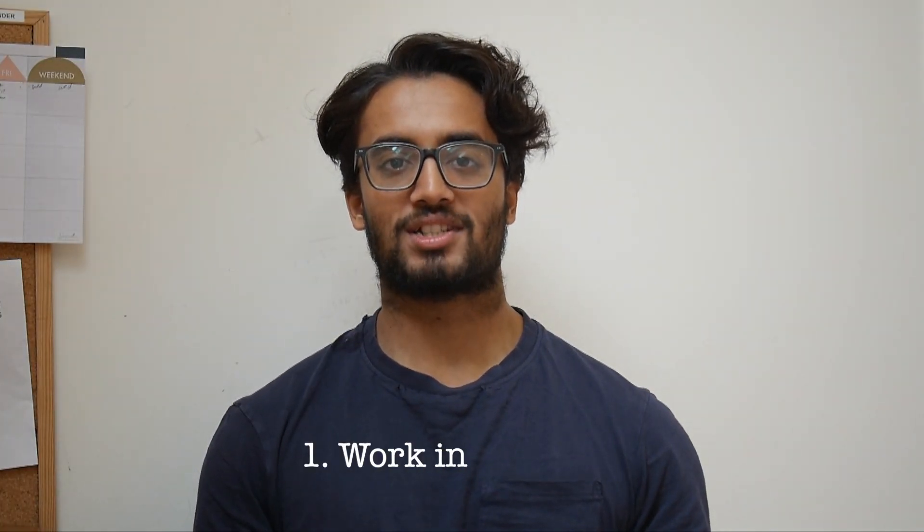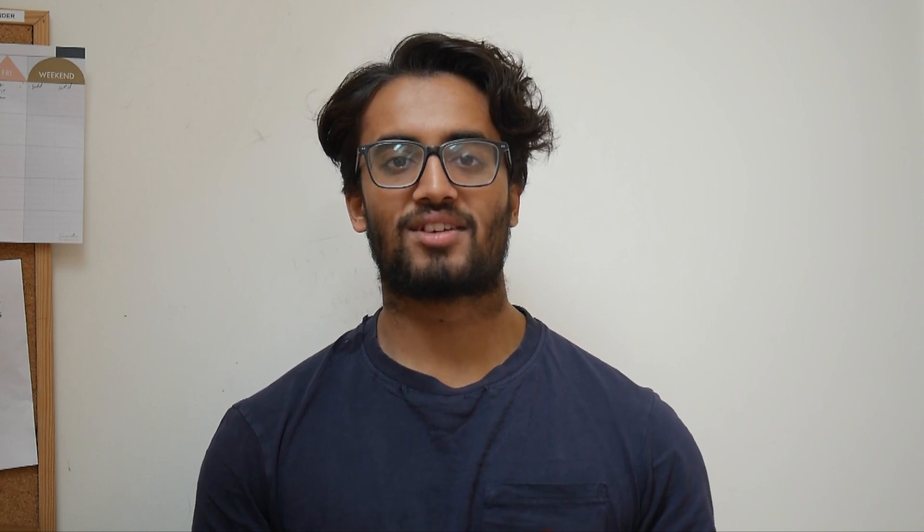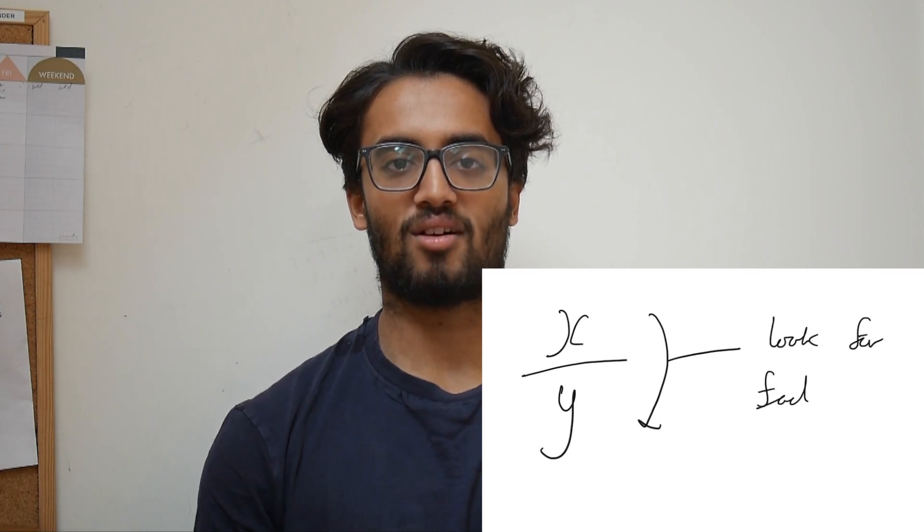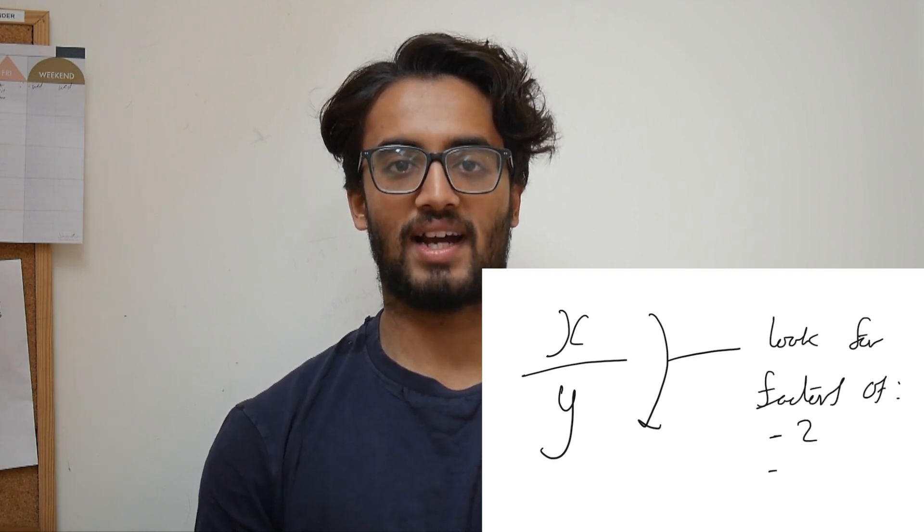So my first tip for doing well in BMAT Section 2 Maths is working in fractions as much as possible. This will really help you speed up your calculations and allow you to avoid unnecessary things such as long division where you can really end up wasting a lot of time and not even getting the correct answer. Between the numerator and denominator of a fraction you want to look for factors of 2 and factors of 10.